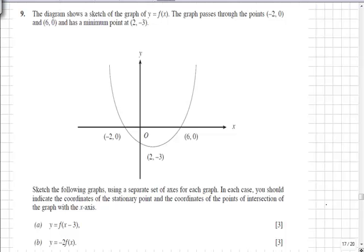In part 9a we are asked to describe and sketch the translation of y equals f of x minus 3. This is carried out by a simple translation right of 3 units, meaning that minus 2, 0 will become 1, 0.